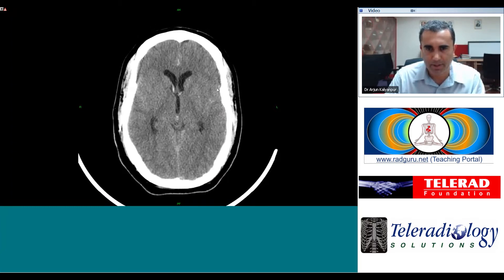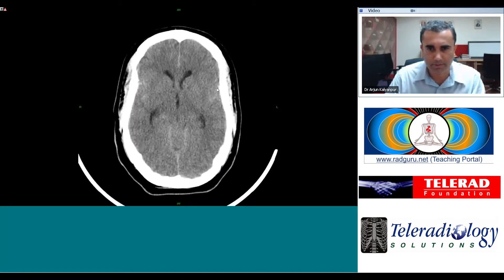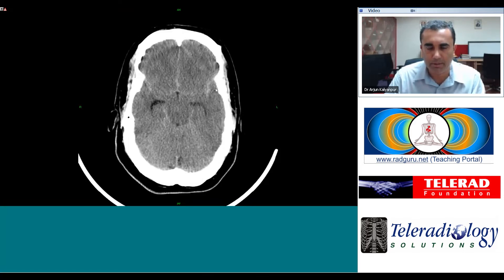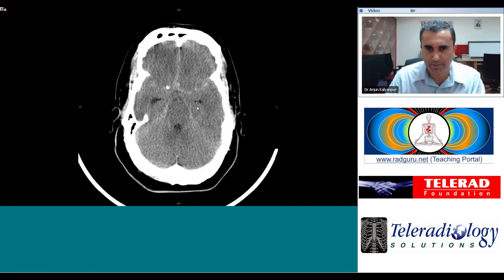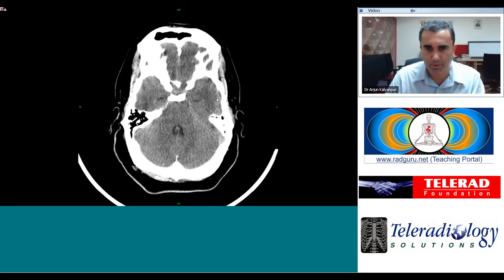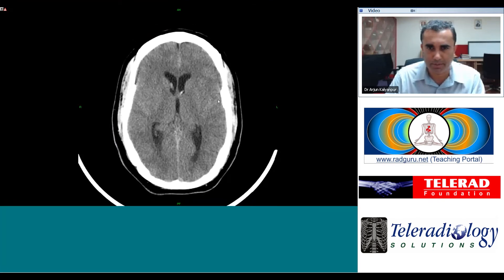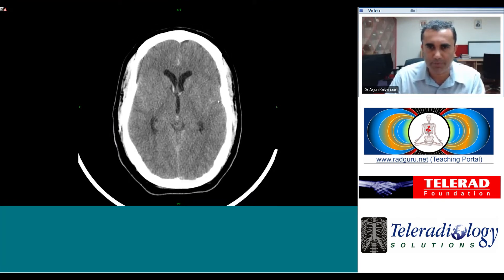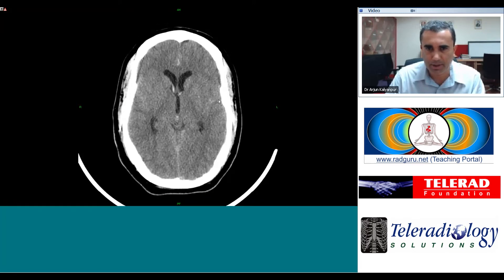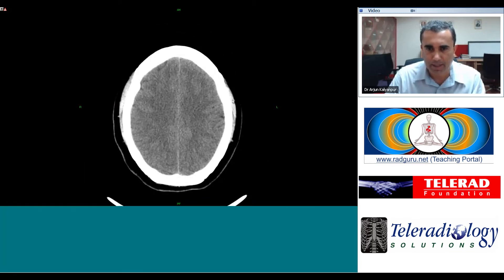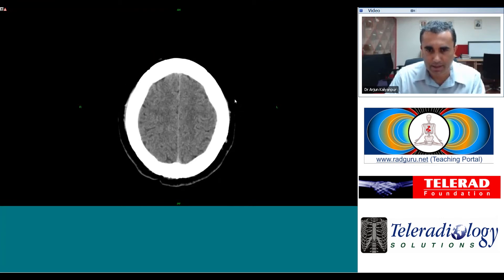The other relatively common midline aneurysm is the basilar artery tip aneurysm. We do not see one in the location of the basilar tip. So this is a ruptured anterior communicating artery aneurysm with subarachnoid hemorrhage resulting in communicating hydrocephalus.